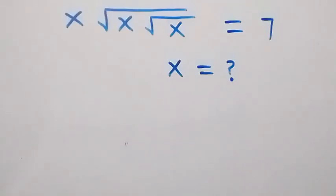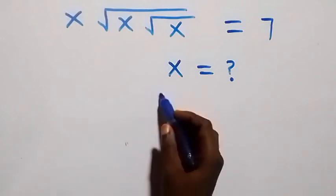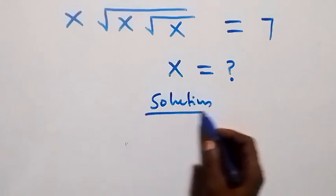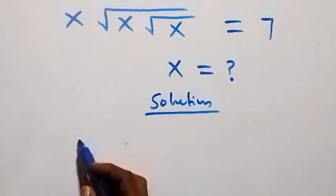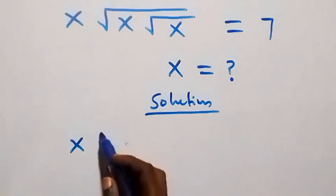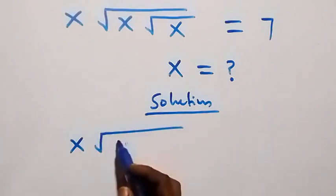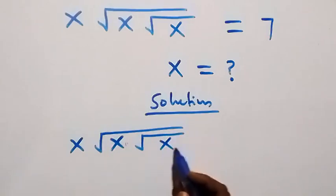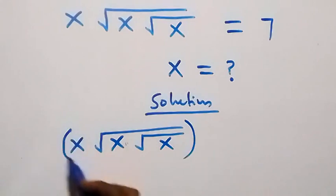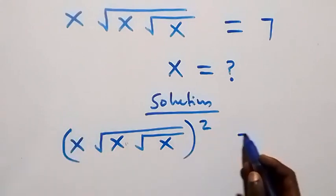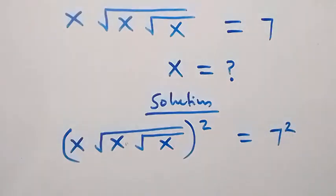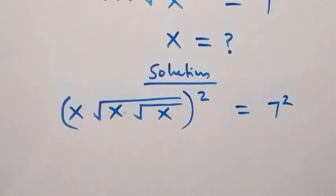Hello, you're welcome. How to solve this nice algebra problem. From what we have here, let's take the square on both sides. That is, we have x times square root of x, then inside that we have square root of x squared. From here, equals to seven. Squaring this side and here.